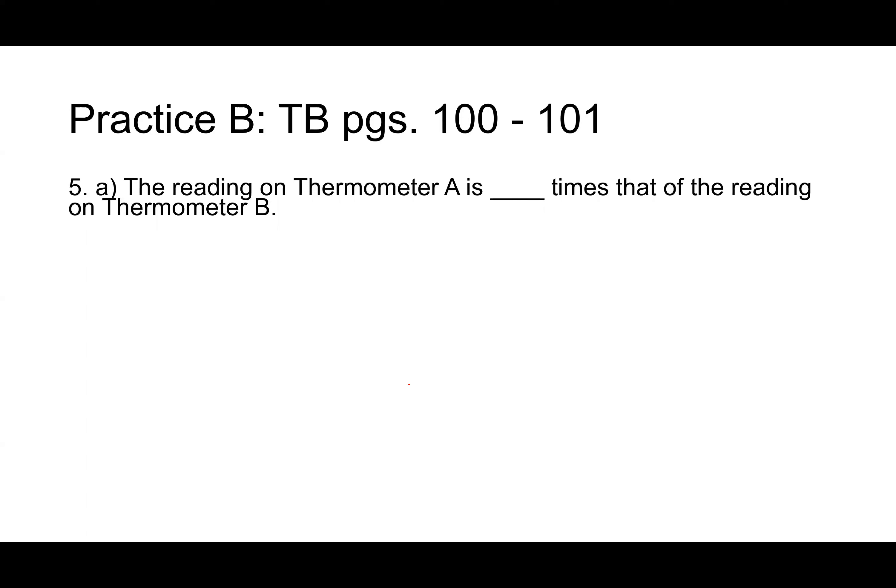The reading on thermometer A is blank that of the reading on thermometer B. Find the ratio of the reading on thermometer A to the reading on thermometer B. Let's start with the ratio first. We want A to B. Looking on page 101, what is the reading on thermometer A? Annie? 70 to 105. Great job. When you simplify that, we could divide by five first. If we divide by five, we get 14 to 21. Is that simplified? What can I do? Divide them both by seven. Nice job, so two to three.